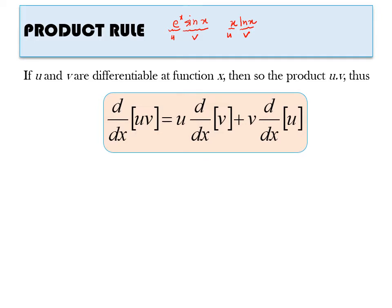And maybe we have x cos x — this one is u and this one is v. So what is the formula for the product rule? It's u times dv/dx, meaning you differentiate v. The formula is: u times v prime plus v times u prime.